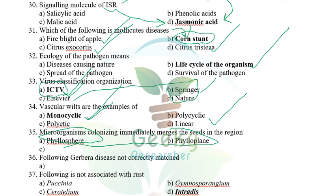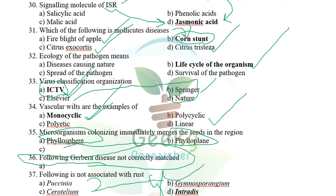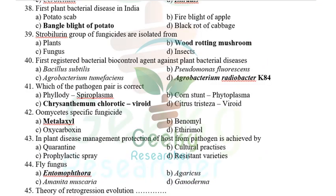Which of the following is not associated with rust genera? Puccinia, Uromyces, and Gymnosporangium are all rust genera. Intradius (or something similar) was the option that is not a rust genus. I'm very sure Puccinia, Uromyces, and Gymnosporangium are genera of rust.